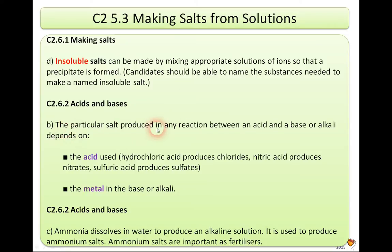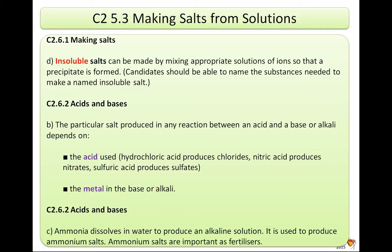The particular salt produced in any reaction between an acid and a base or alkali — remember, alkalis are bases but they dissolve in water — depends on the acid used. Hydrochloric acid produces chlorides, nitric acid produces nitrates, and sulfuric acid produces sulfates, along with the metal in the base or alkali. What's the original metal you used? What's the acid you used? That determines what we produce in the end, because what goes in must come out, even if it's in a slightly different form.